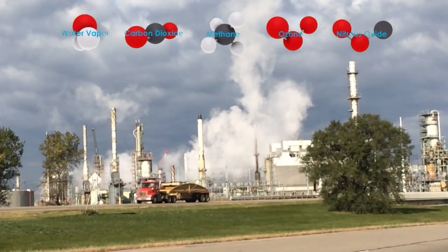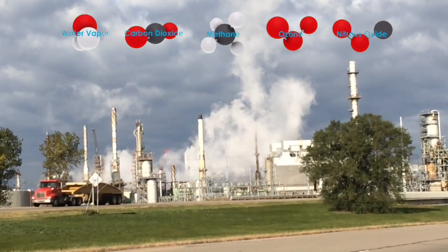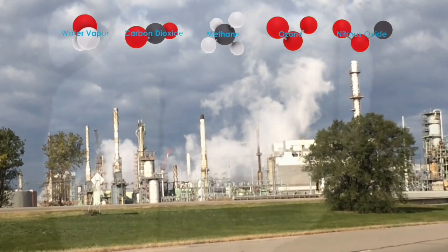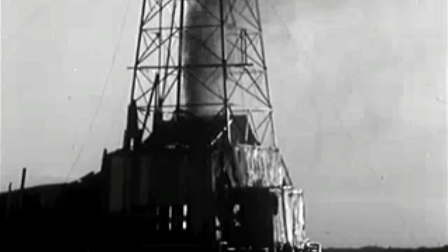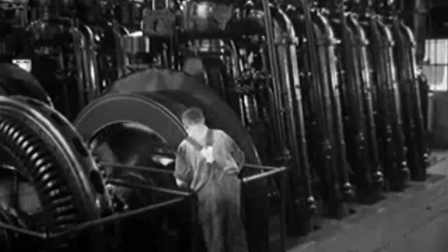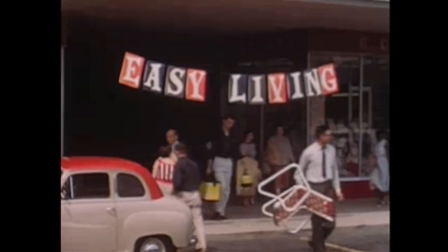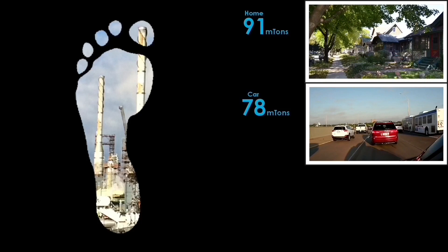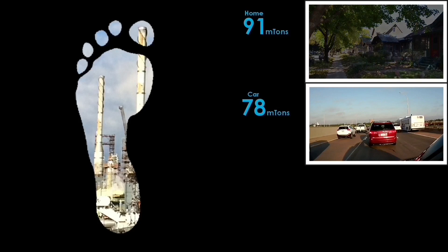Greenhouse gases absorb heat when they interact with sunlight — they are the reason Earth has a climate. Your carbon footprint is the total of all the greenhouse gas produced by what you do, and by the energy spent making the things you buy: the place you live, the car you drive, the clothes you wear.